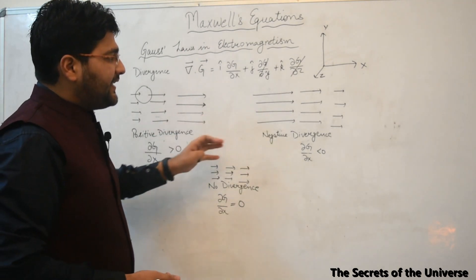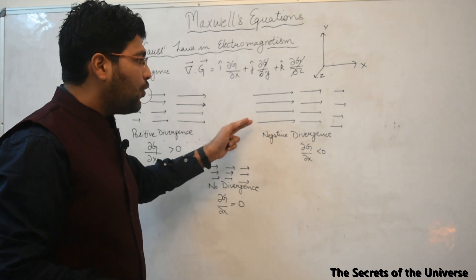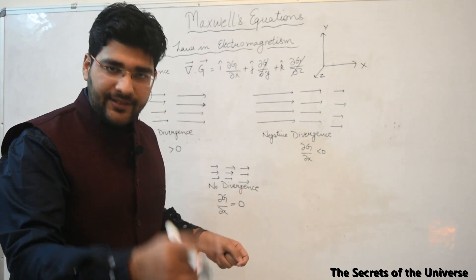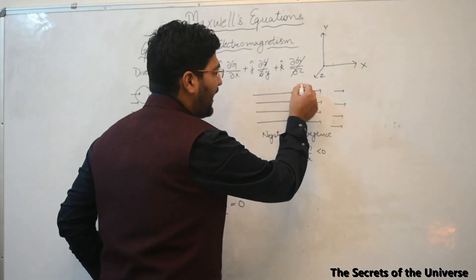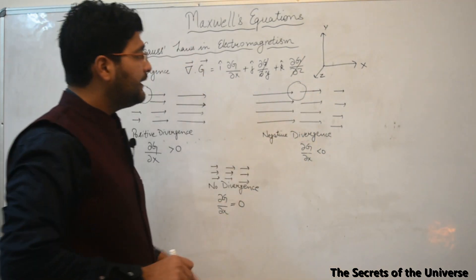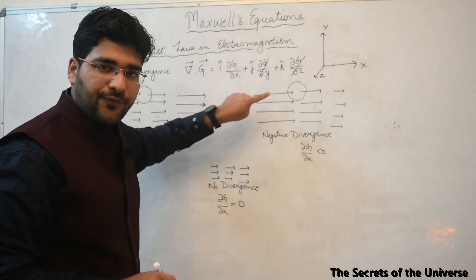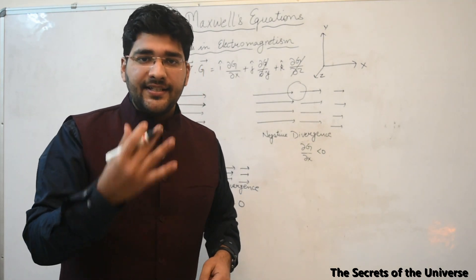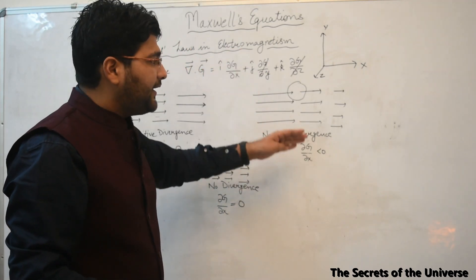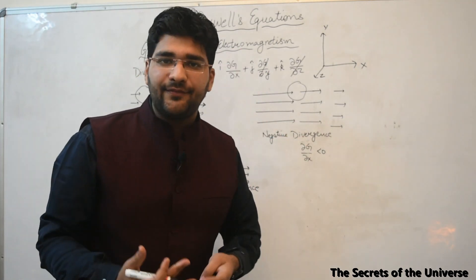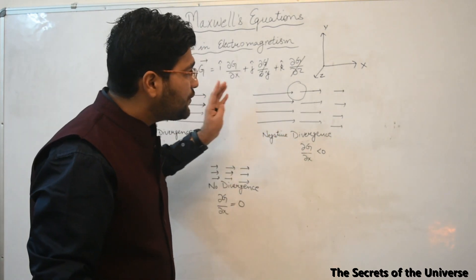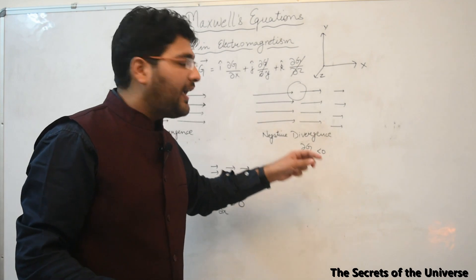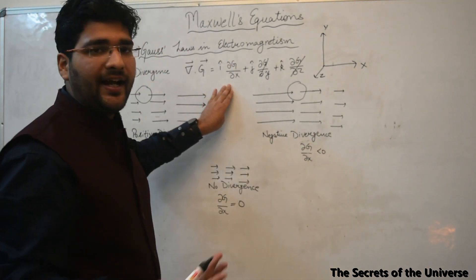In the second case, as the field goes in the X direction, the length of the arrow is decreasing — so the strength of the field is also decreasing. We again draw an arbitrary sphere. The amount of field going inside this sphere is more than what is coming outside, meaning there is some sink inside that sphere causing the field to decrease. This is known as negative divergence, where the derivative of G with respect to X is less than zero.